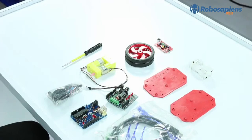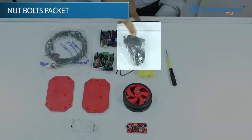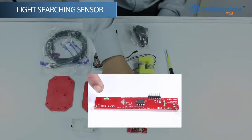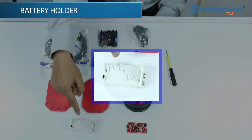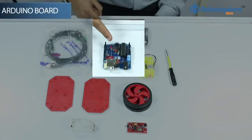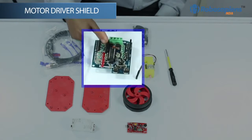This kit contains following components: screwdriver, nut pole packet, pair of motors, two wheels, light searching sensor, battery holder, upper chassis, lower chassis, USB cable, Arduino board, motor driver shield.